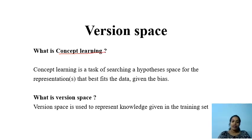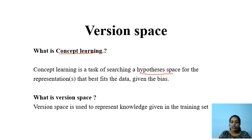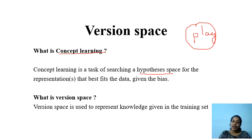Concept learning is a process to find a suitable representation method or suitable hypothesis among the hypothesis space. For example, what is a concept? We can take an example of play games. The concept that we want to learn is play. We are provided with some positive examples and some negative examples, and we have to find a suitable representation or hypothesis to exactly define this concept of play.